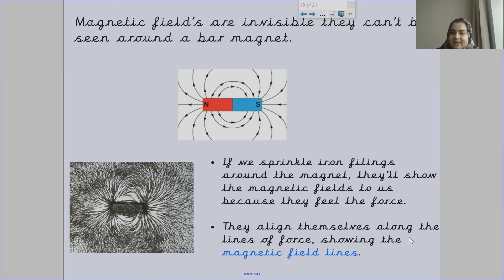They align themselves along the lines of force showing the magnetic field lines. If you can see here, they're showing them, they're aligning themselves so they can show you the magnetic field lines.